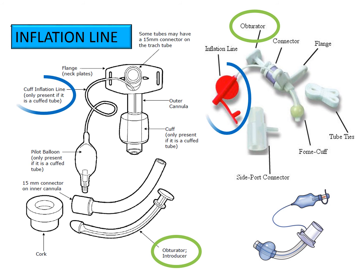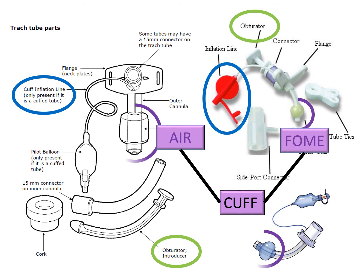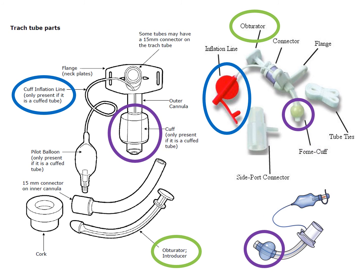Cuff tubes are inflated with air or water through the inflation line; the cuff can be either air or foam. Cuff tubes are most often used with patients requiring mechanical ventilation, as the purpose of the cuff is not to stabilize the tube but to direct airflow. Cuffless tubes allow air movement around the outside of the tube through the upper trachea and larynx so the patient can speak normally.